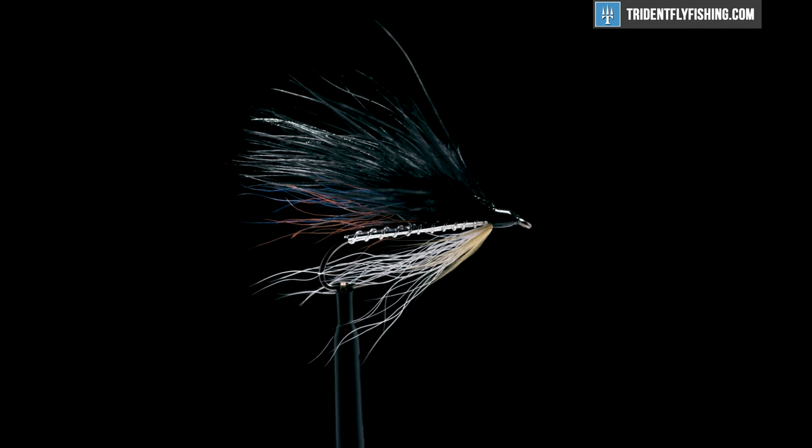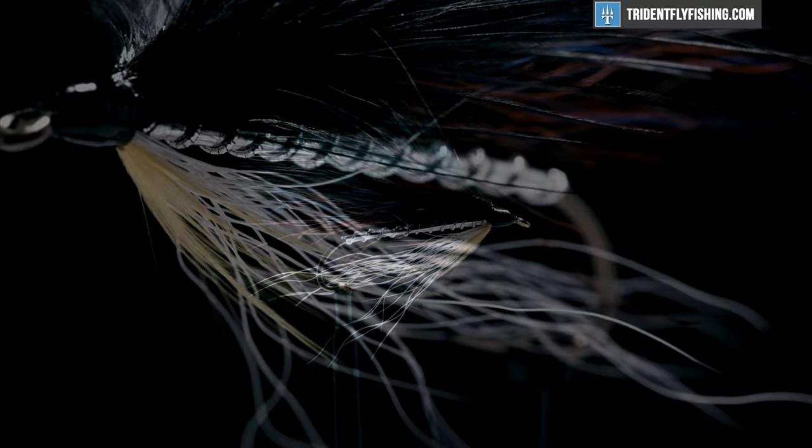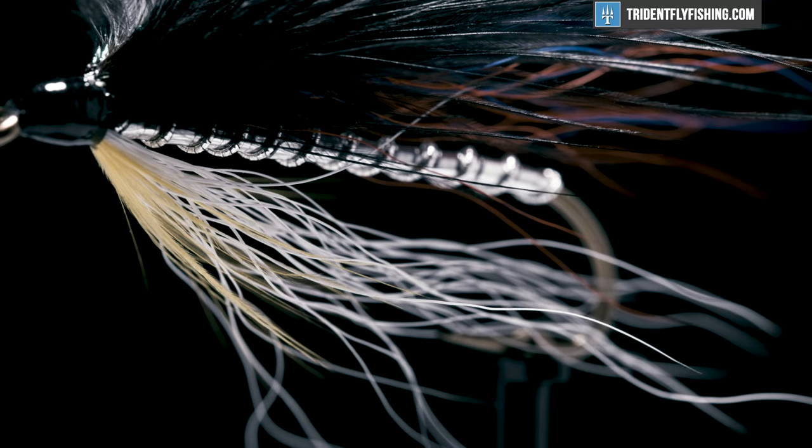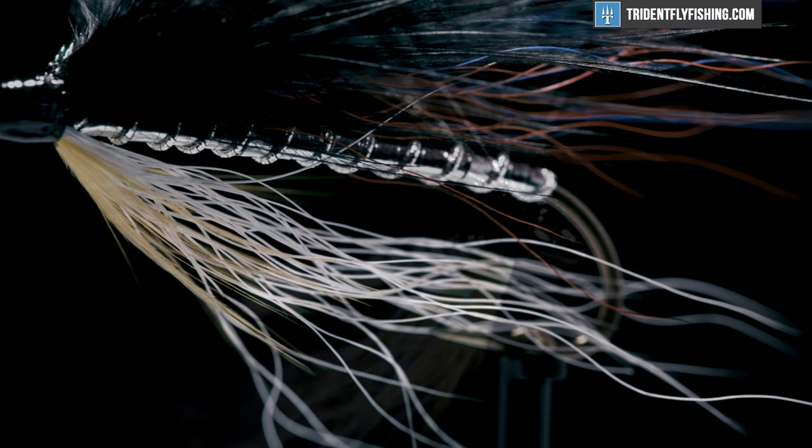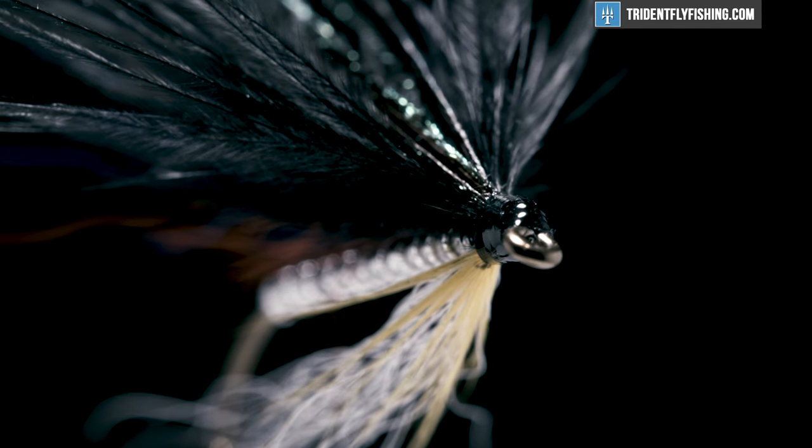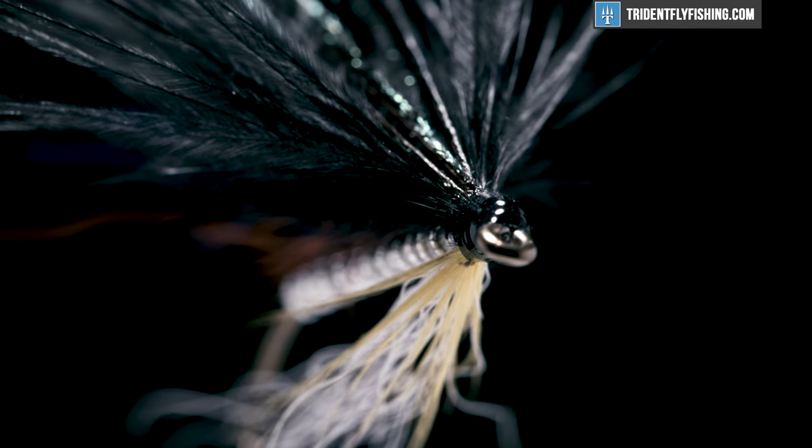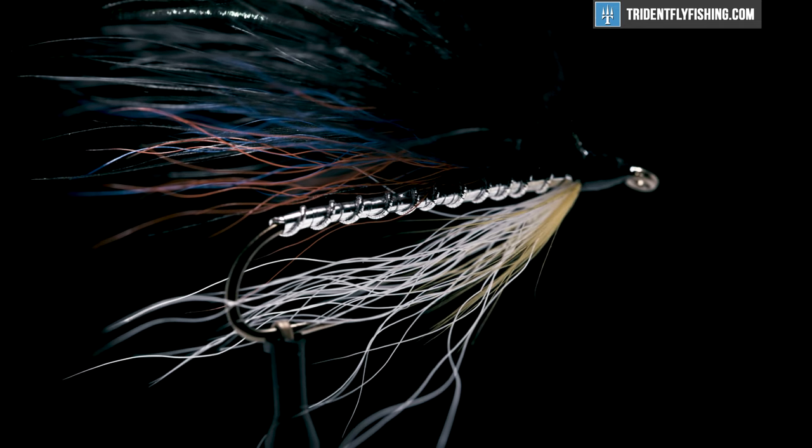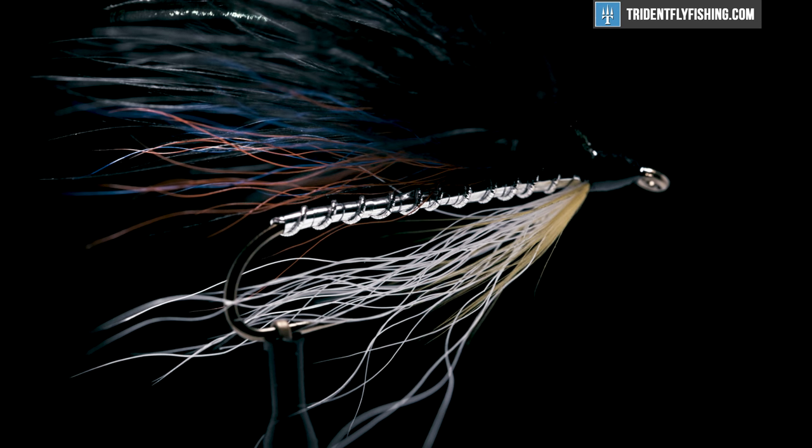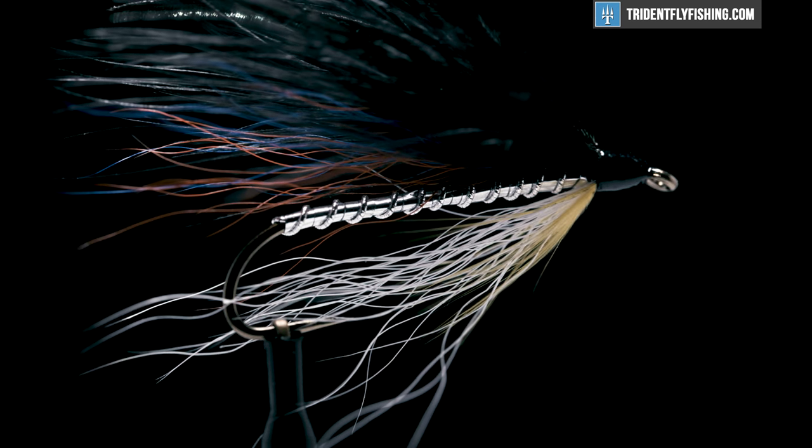Hello, I'm Carl at Trident Fly Fishing. Today we're going to tie the Cannebago Smelt. It was originated in the early 1950s by Bud Wilcox, who was a Maine game warden and guide in the Rangeley Lakes area. Originally it was tied with saddle hackle feathers, but this variation is going to be tied with marabou. It's a very popular fly for landlocked salmon in the early spring when smelt is starting to run and it's usually tied in sizes two through eight.